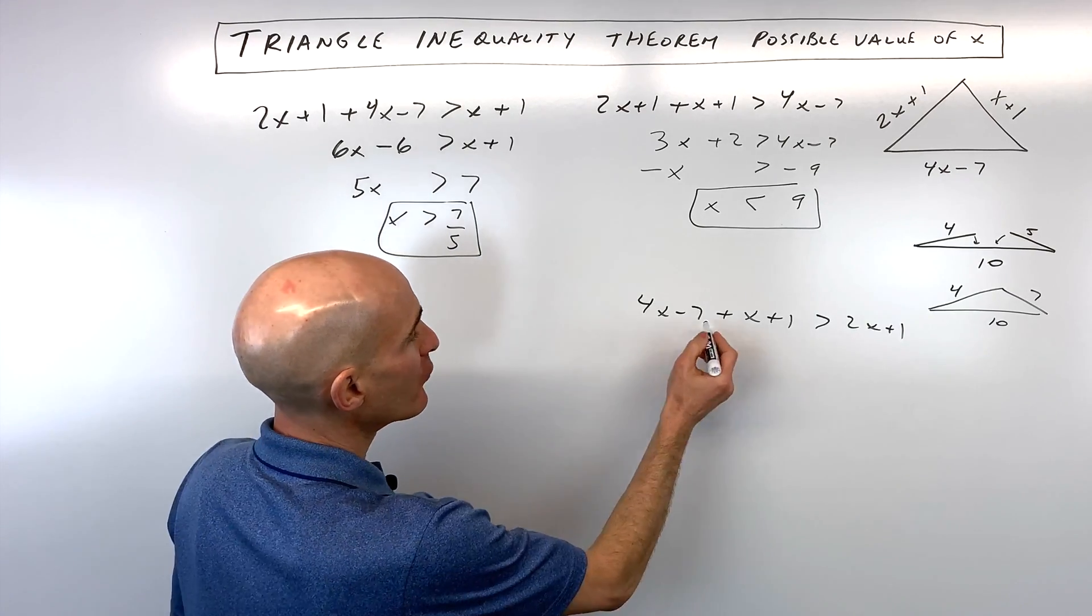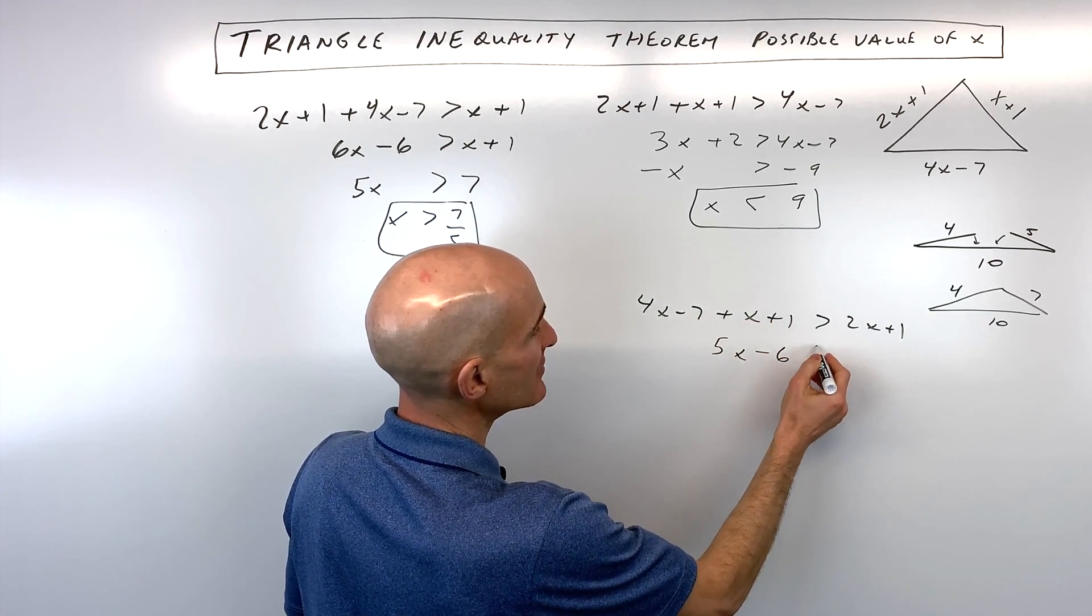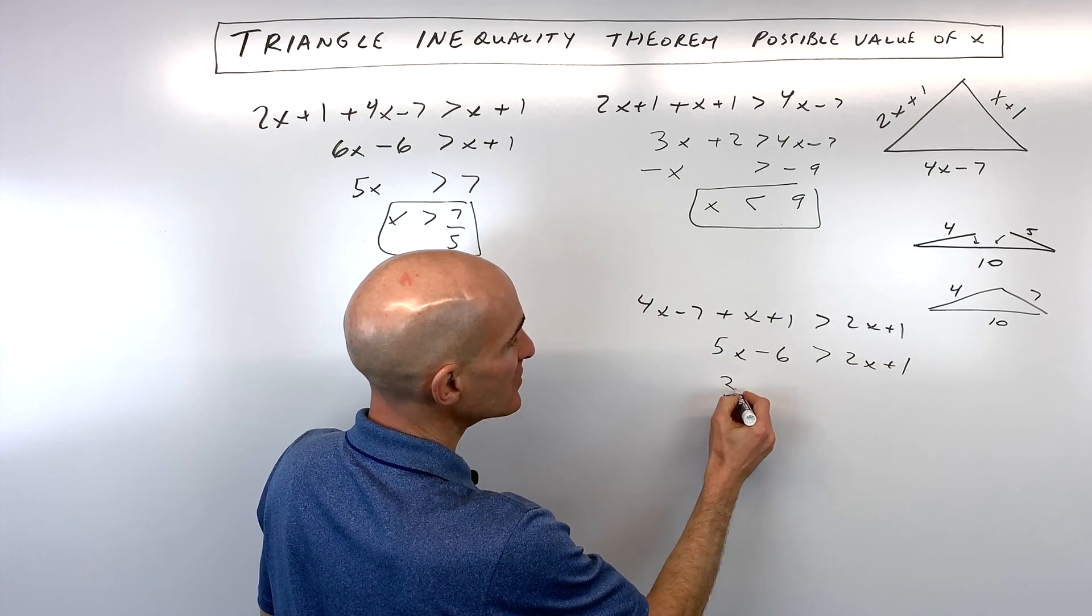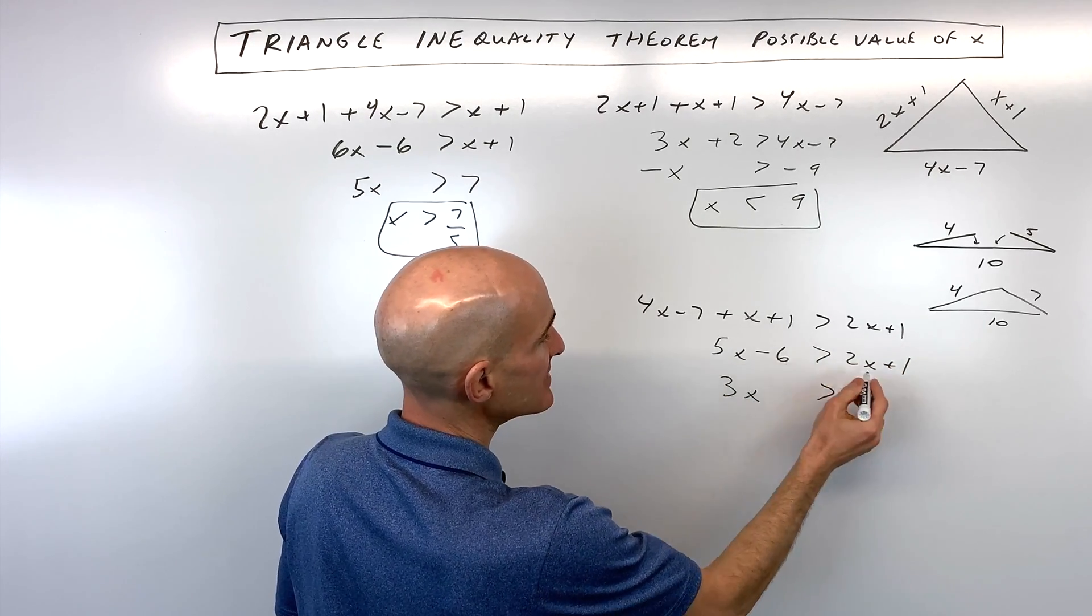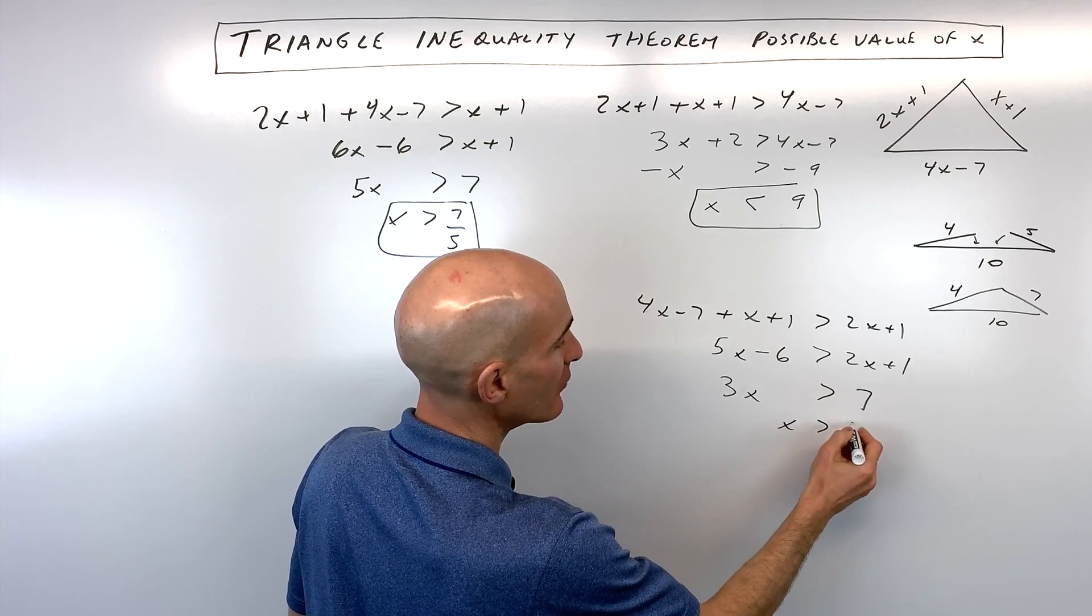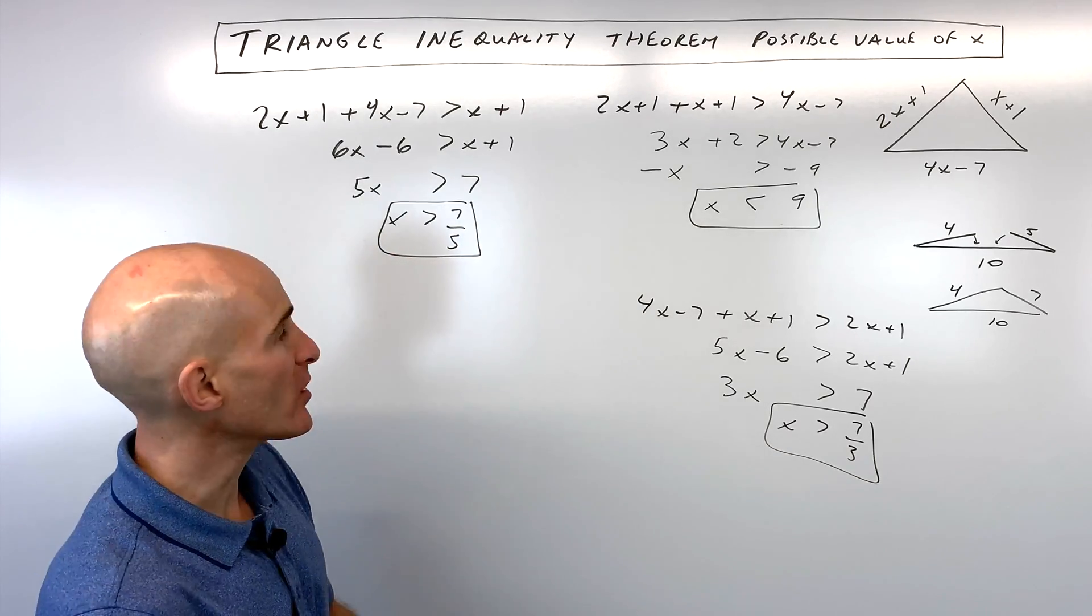And the third inequality, we have four x plus one x is five x, negative seven and positive one is negative six. Here if I subtract two x from both sides we get three x, and if I add six to both sides we get seven, and if I divide both sides by three to get x by itself, we have x is greater than seven-thirds. So I think that part you'll probably be pretty familiar with, but this part here is what tricks students a little bit.